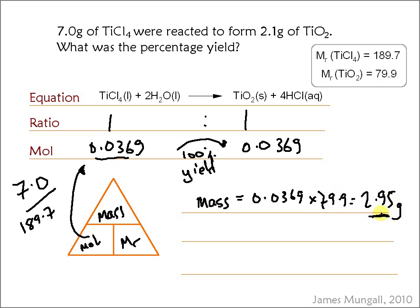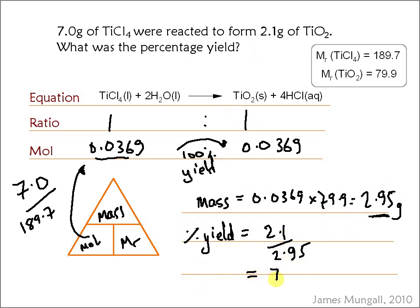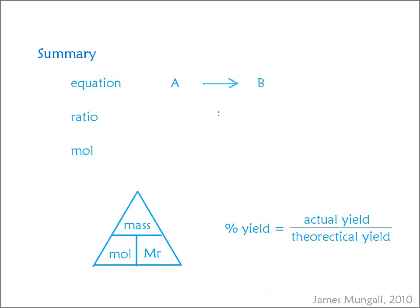So that is the mass of TiO2 you would form if it was 100% yield. The percentage yield is going to be our actual yield, which was 2.1 grams, divided by the theoretical yield of 2.95 grams. As you can see, we didn't quite get 100% yield — 2.1 divided by 2.95 comes out as 71%.